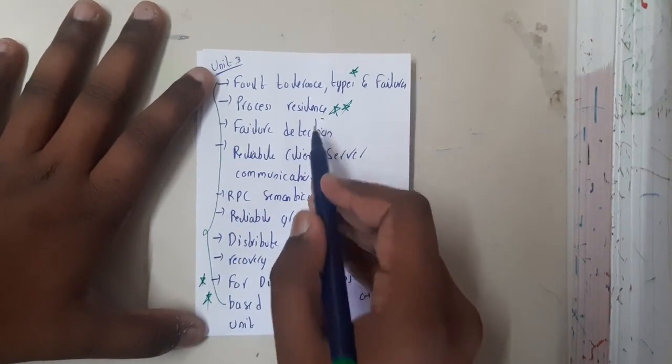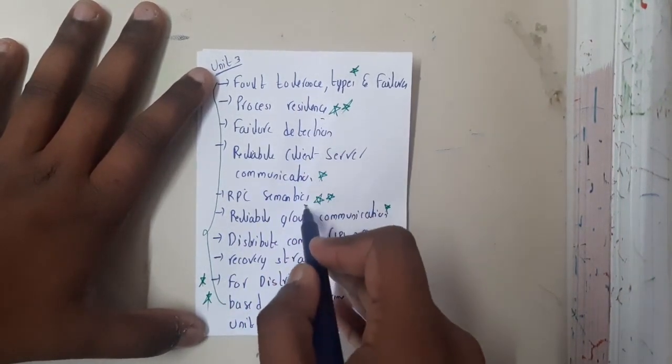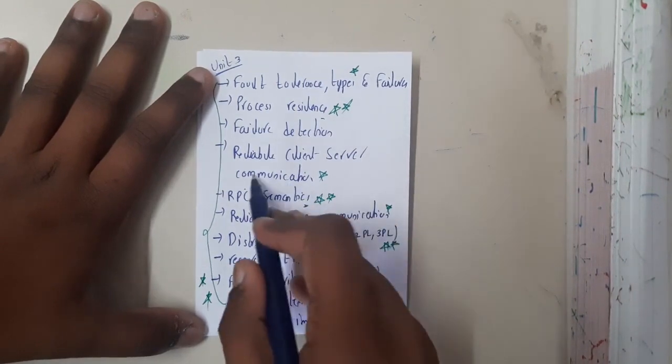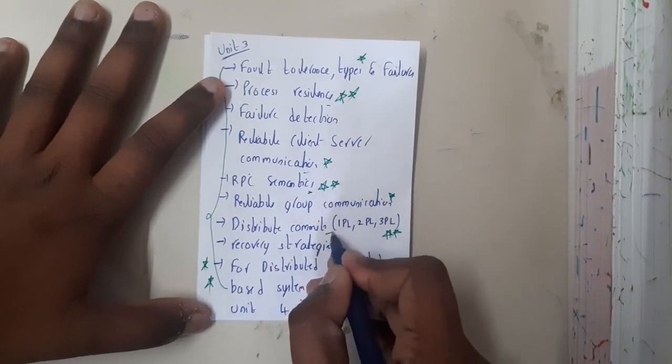You should be perfect with process resilience, similarly we need to be perfect with RPC, RPC semantics, and similarly reliability client-server. Reliability group communication and distributed comment, please make sure that you are perfect with these three.